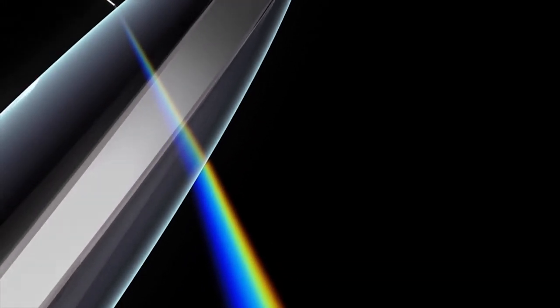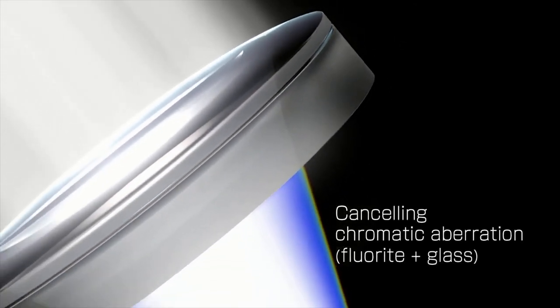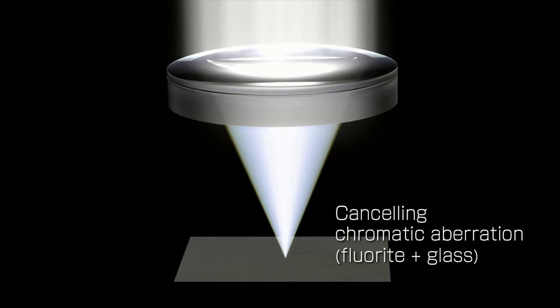This characteristic, called extraordinary dispersion, can be used to compensate for chromatic aberration by combining a fluorite lens with a glass lens.